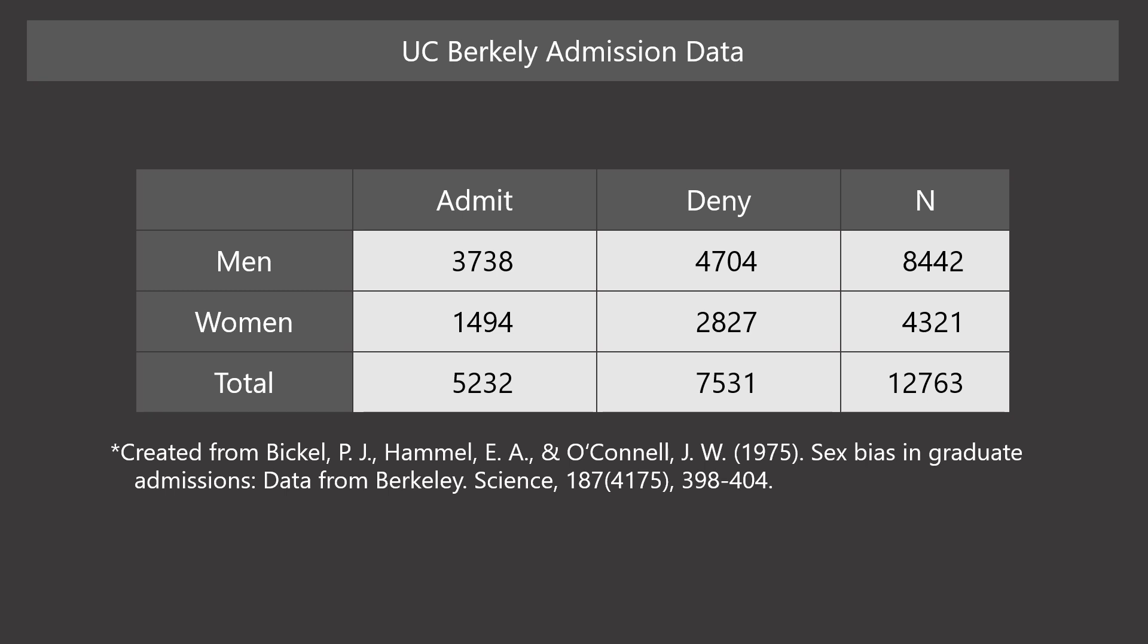Let's see famous data that was analyzed by Dr. Bickel and colleagues. It is known as UC Berkeley admission data. The crosstab shows the data of applicants to UC Berkeley's admission in Fall 1973. There were 12,763 applications to the 101 graduate departments and interdepartmental graduate measures. 8,442 of them were male and 4,321 were female. The table shows that 44.2% of the males and 34.6% of the females were admitted. It seems that males were more likely to be admitted. How do you think?